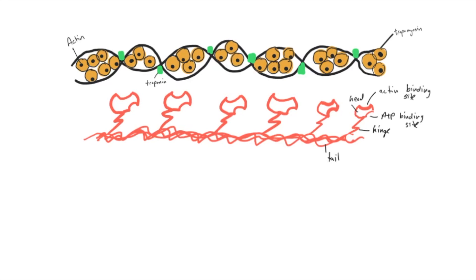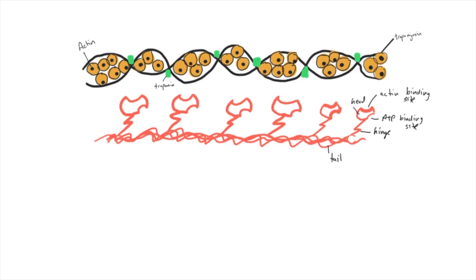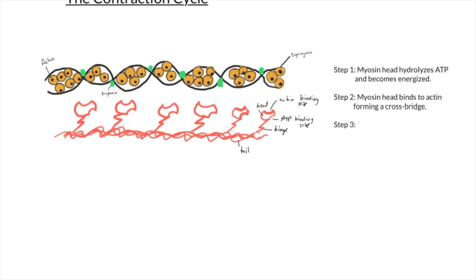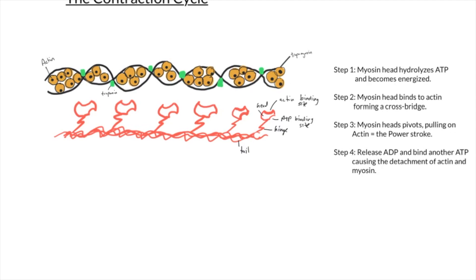Let's see what happens when we introduce an action. The contraction cycle in steps: Step one: the myosin head hydrolyzes ATP and becomes energized and oriented. Step two: the myosin head binds to actin, forming a crossbridge. Step three: the myosin head cocks and pivots, pulling the thin filaments past the thick filaments towards the center of the sarcomere — this is known as the power stroke. Step four: the myosin head rebinds another ATP and releases the ADP created from hydrolysis in step one, detaching the crossbridge from actin and resuming its original relaxed state.